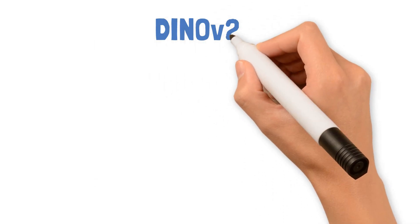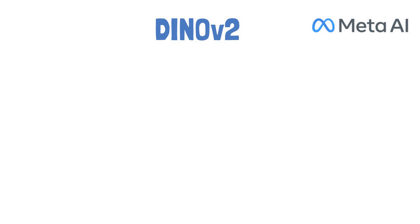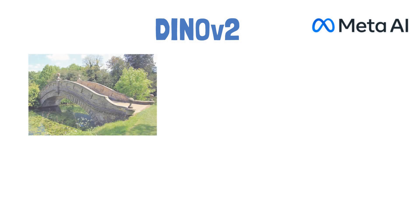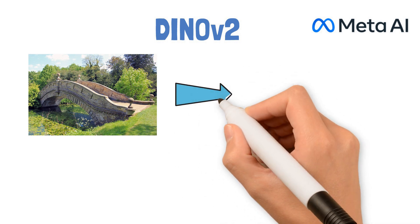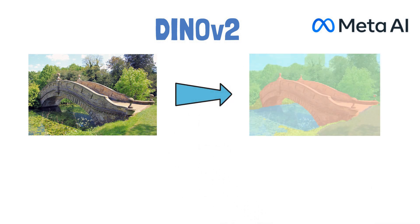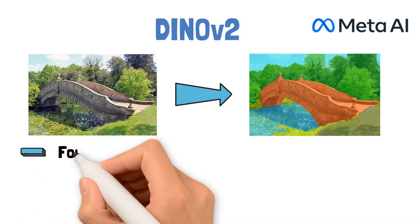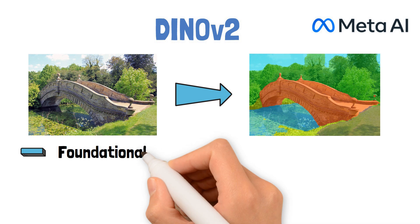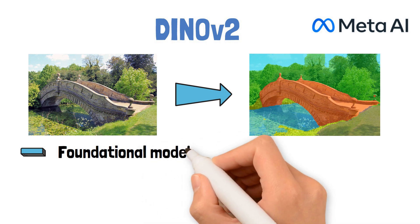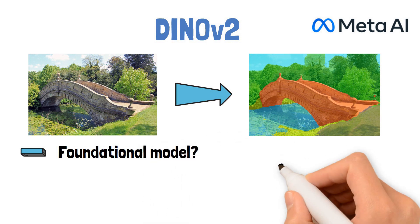Thank you for joining this ESBOARD video about DynoV2, a new computer vision model from Meta AI that claims to finally provide a foundational model in computer vision, closing some of the gap from natural language processing, where foundational models have already been common for a while. In this video we'll talk about what a foundational model in computer vision means, and why DynoV2 can count as such.